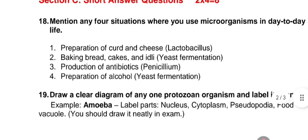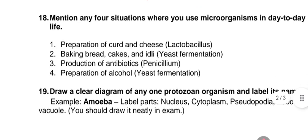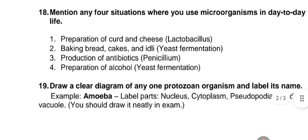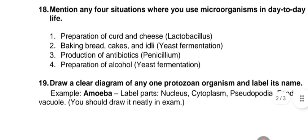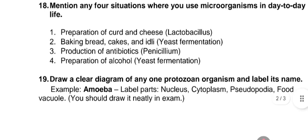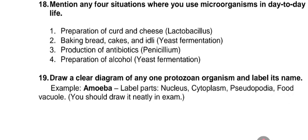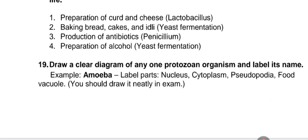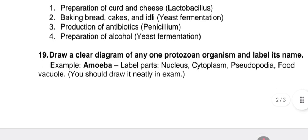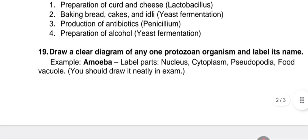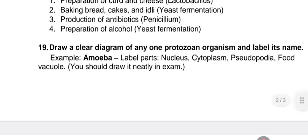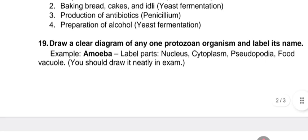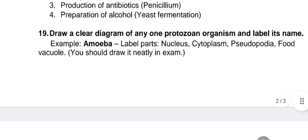Section C contains short answer questions — questions 18 and 19, each carrying four marks, totalling eight marks. Question 18: mention any four situations where you use microorganisms in day-to-day life. Answer: 1) preparation of curd and cheese using Lactobacillus; 2) baking breads, cakes, and idli using yeast fermentation; 3) production of antibiotics using Penicillium; 4) preparation of alcohol using yeast fermentation.